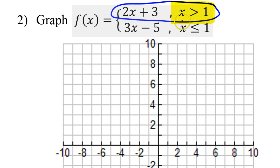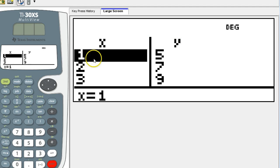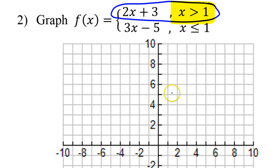We have the point 1 comma 5 — let's graph that immediately. Is it going to be an open circle or a closed circle? Open. Caroline explains: when it's greater than without the equal to, it's an open circle. When the domain symbol has the 'or equal to' line under it, that's when it's a closed circle. If it doesn't have the 'or equal to,' it's open. So this one is an open circle at 1 comma 5.